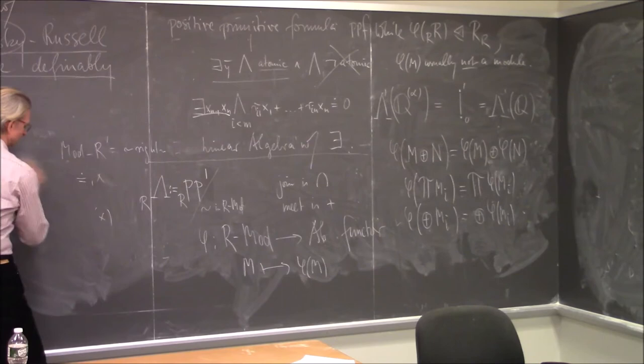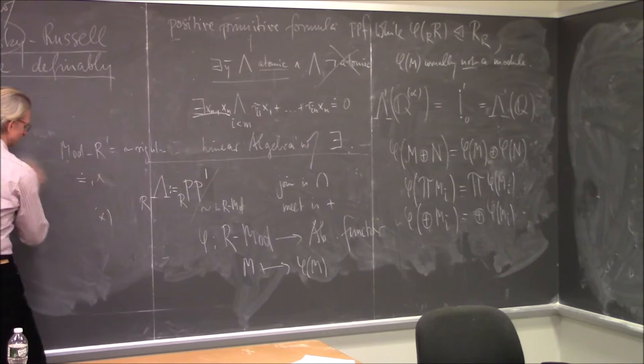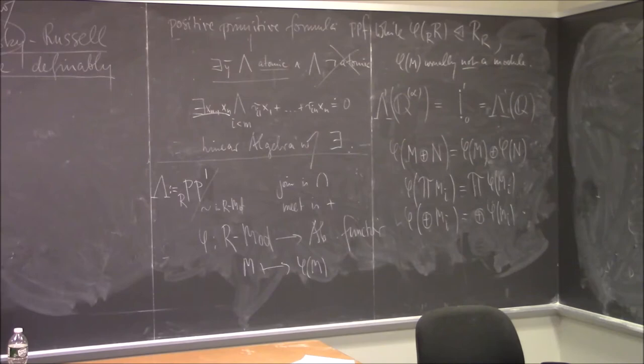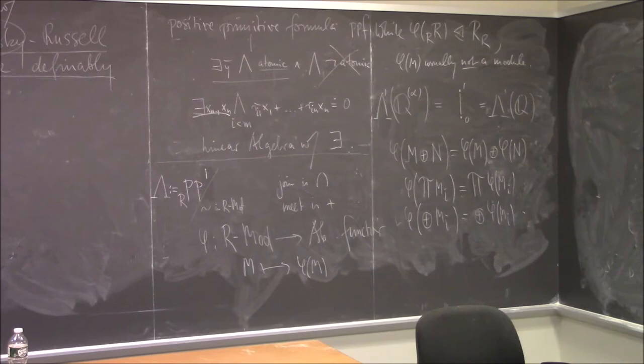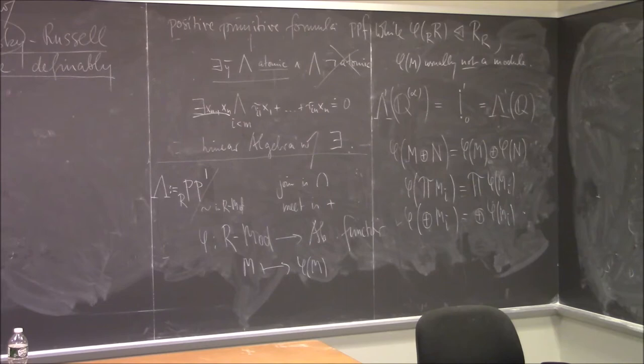That's the setting. Now there's some more machinery developed by Prest in the 80s — more than three decades ago — which gives us an interesting tool. We called it elementary duality. That is a map D — we call it D — which takes left PP formulas to right PP formulas, but it's an anti-isomorphism.